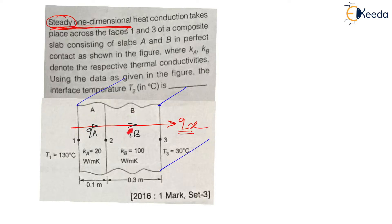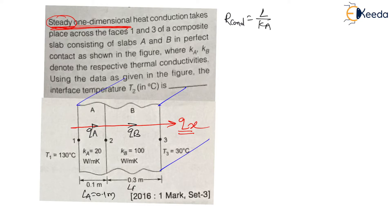As it is conduction heat transfer through a solid, the conduction resistance R_conduction equals L divided by K·A — that formula we have derived for conduction resistance, where L is the length of that particular slab, K is the thermal conductivity, and A is the area perpendicular to the direction of heat flow. Length of A is 0.1 m and length of B is 0.3 m.